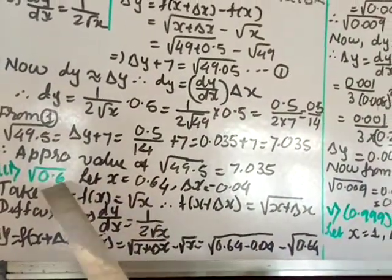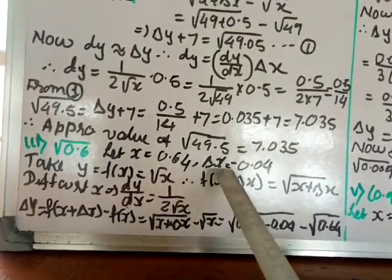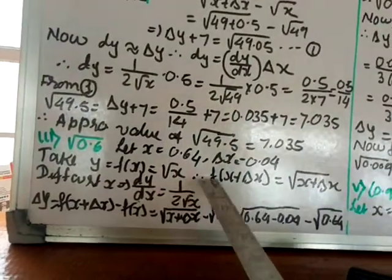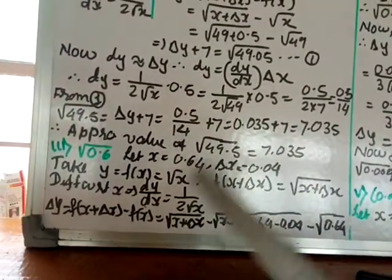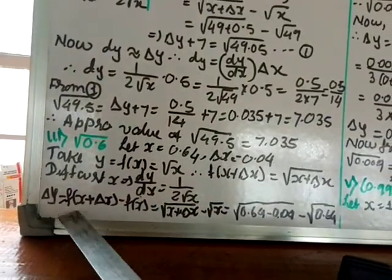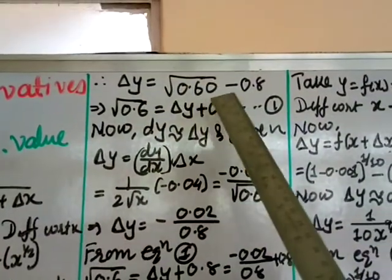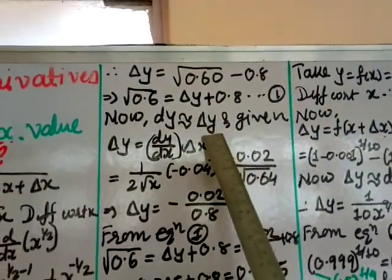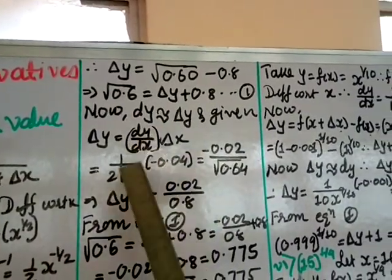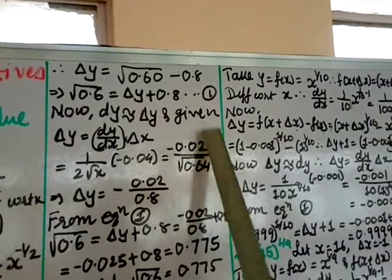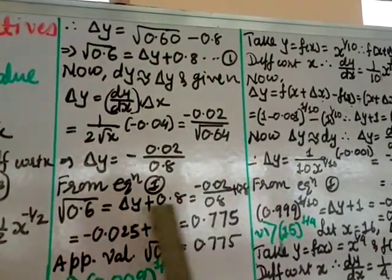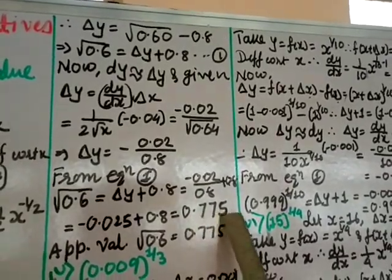Question 3: √0.6. Take x = 0.64 and δx = -0.04, since 0.64 - 0.04 = 0.60. Define y = f(x) = √x, dy/dx = 1/(2√x). Using δy = f(x + δx) - f(x): √0.60 - 0.8 = δy, so δy + 0.8 = √0.6 (equation 1). Then δy = (1/(2√0.64)) × (-0.04) = -0.02. Substituting: √0.6 ≈ -0.02 + 0.8 = 0.775.